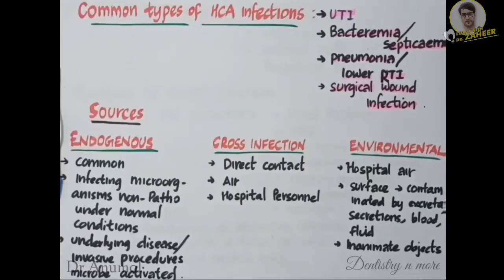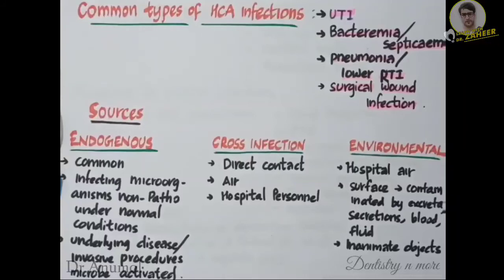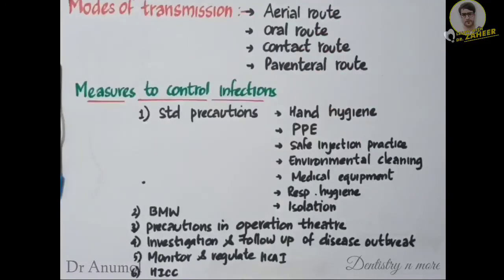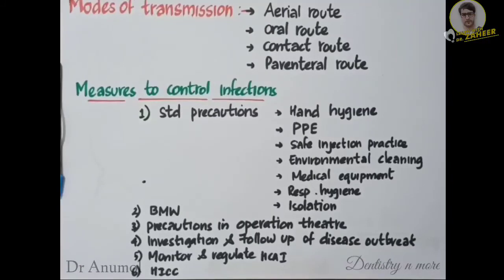Other environmental sources include surfaces contaminated by patient secretions, excreta, blood, and body fluids; animals and insects; and inanimate objects contaminated by patient secretions or the hands of hospital personnel and visitors. The modes of transmission of healthcare-associated infections are aerial route, oral route, contact route, and parenteral route.